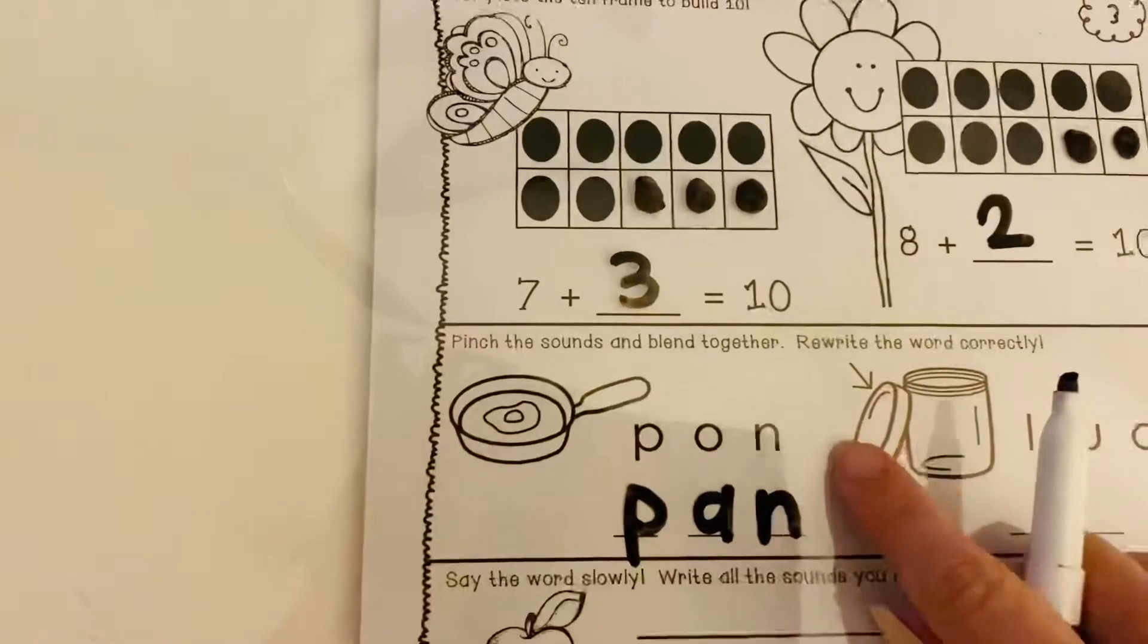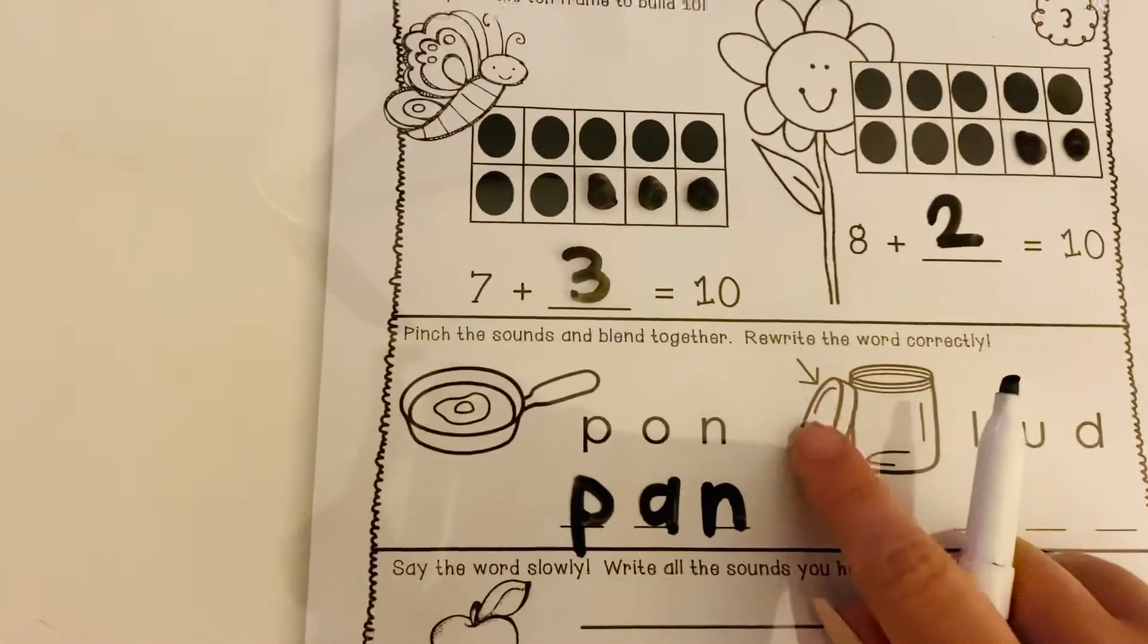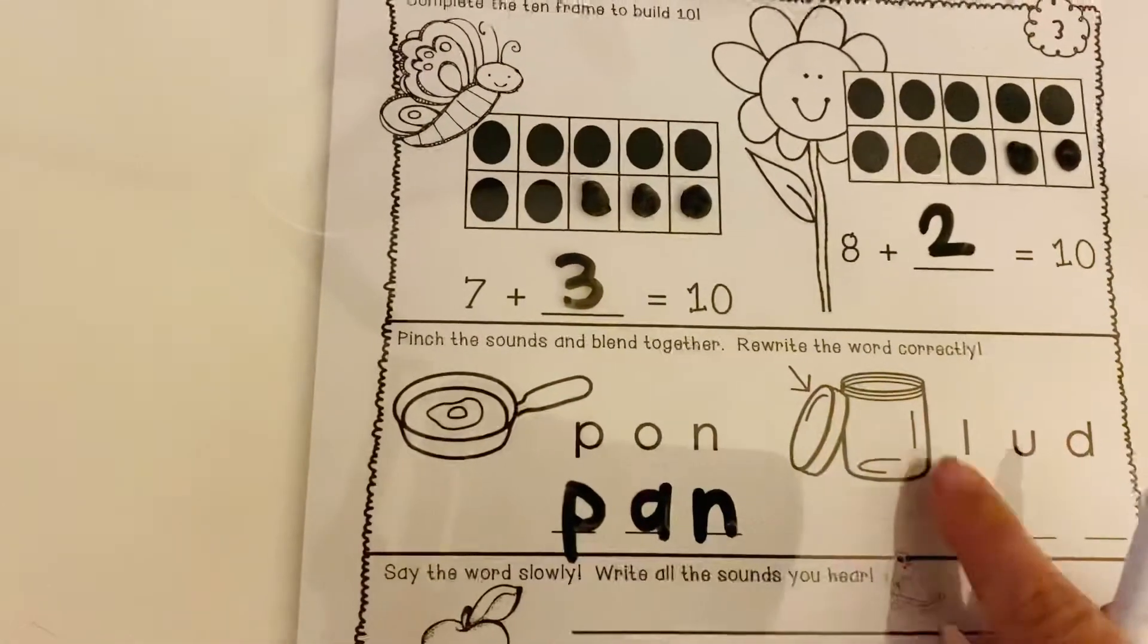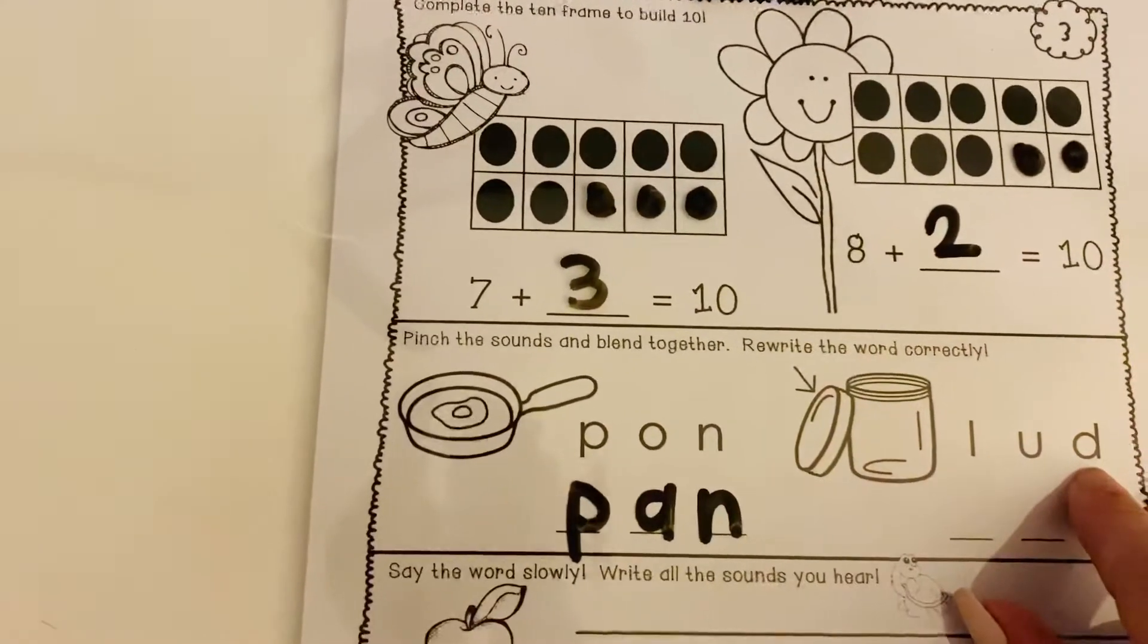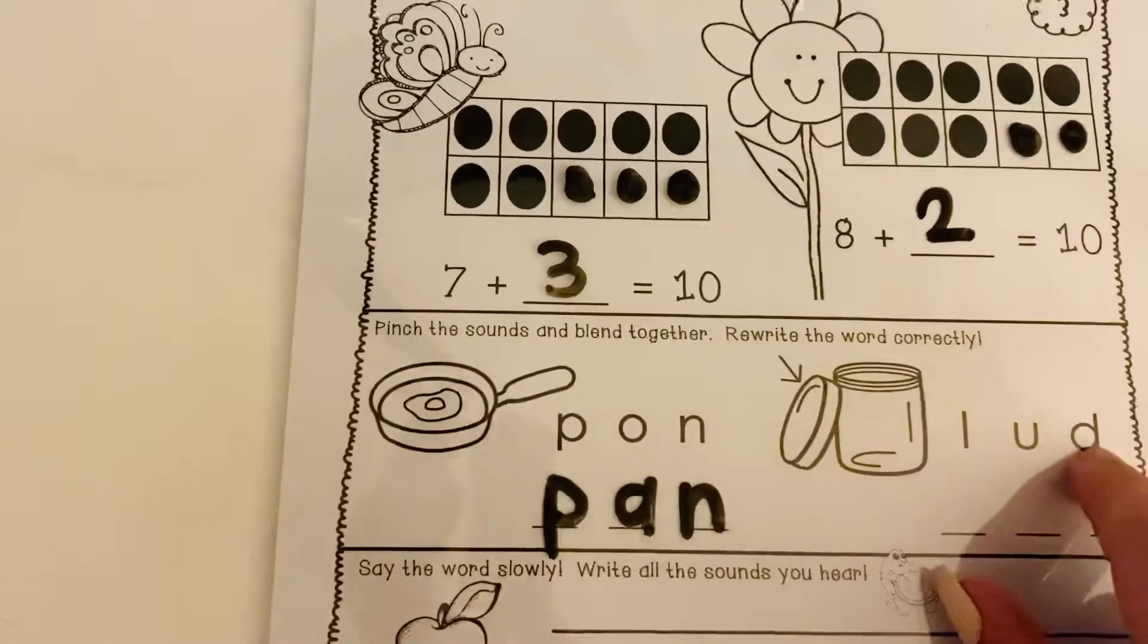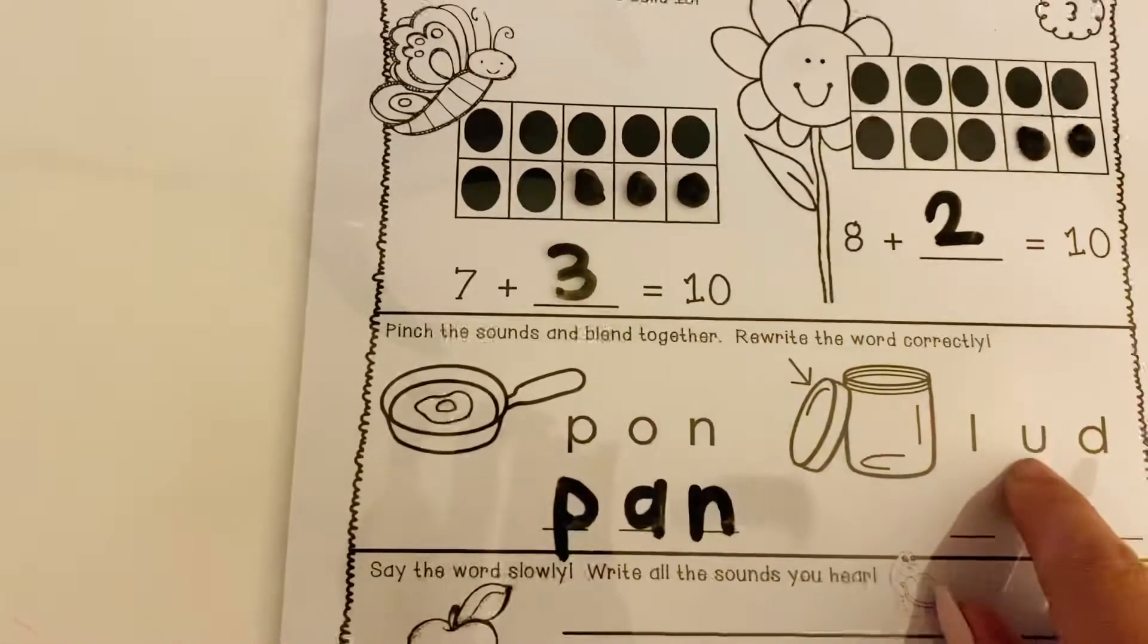And let's do it right here. Remember, they are pointing to the lid of this jar, but the word they give us is l-ud, l-ud. So what sound is incorrect in this word, in l-ud, it's going to be that middle sound again.